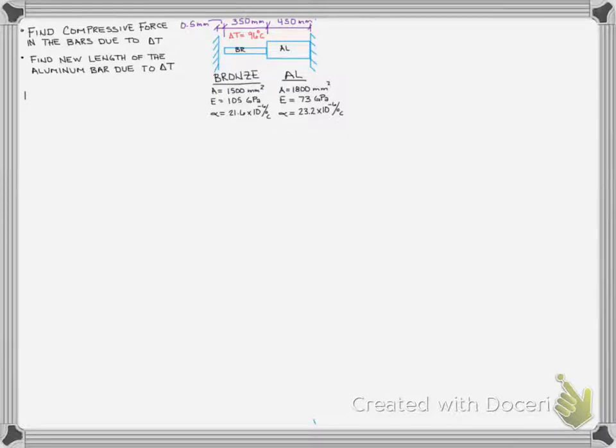So we have a positive delta T. And so we know that both of these materials are going to expand. But they're going to expand by different amounts because they have different coefficients of thermal expansion, which you can see listed under the bronze and the aluminum. And they also have different lengths, so they have different lengths over which to expand.